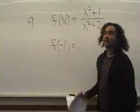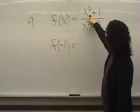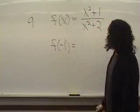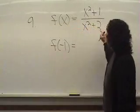So this f of x is just a rule. It's a mathematical rule which takes an x, squares it, adds 1 to it, and divides it by the quantity x squared, same number, plus 2.